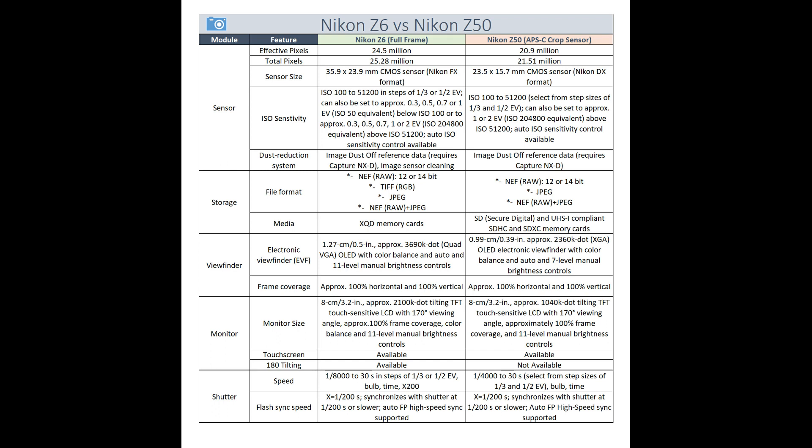First, let's talk about the sensor. The effective megapixels in the Nikon Z50 is 20.9 million, compared to 24.5 million in the Nikon Z6. So the Z6 has more megapixels and a larger sensor, which comes in handy when you are printing your work.